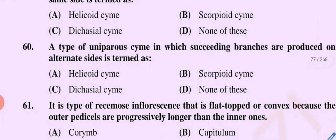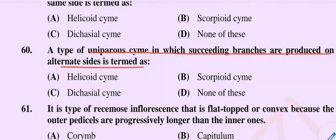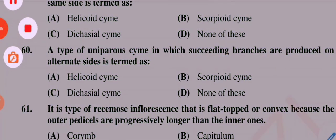Question number 60: A type of uniparous cyme in which succeeding branches are produced on alternate sides is termed as — option A helicoid cyme, option B scorpioid cyme, option C dichasial cyme, option D none of these. The correct option is option B, scorpioid cyme. Dear students, that concludes today's lecture. We will meet again in the next video. Stay connected, Allah Hafiz.